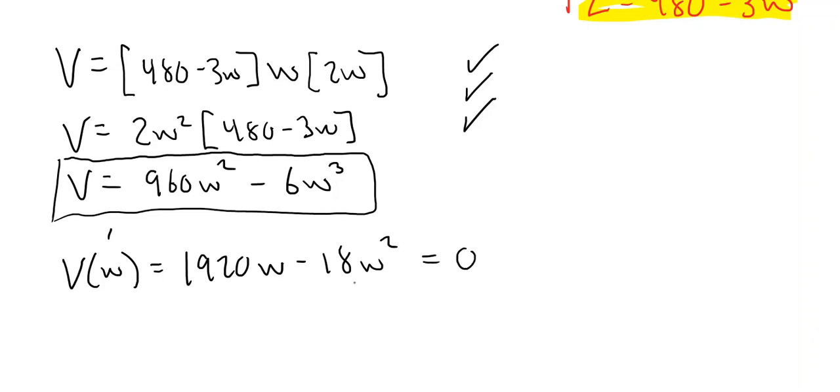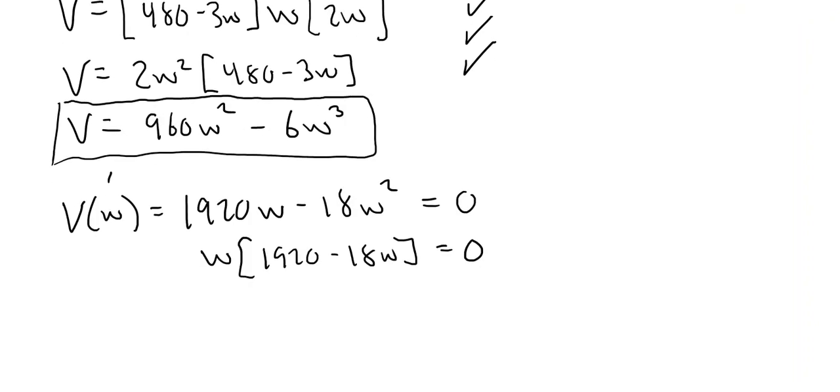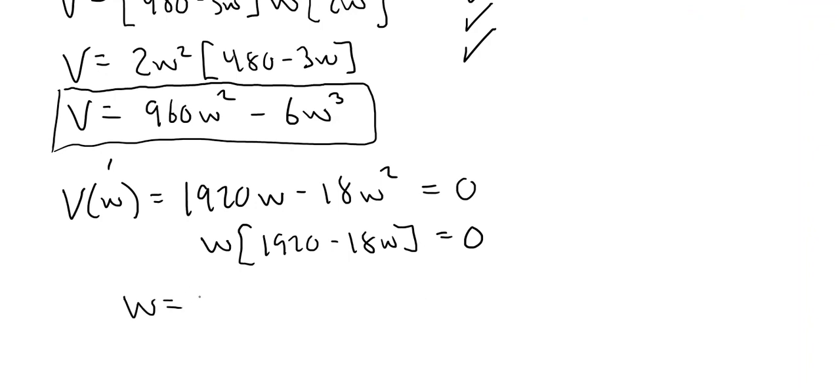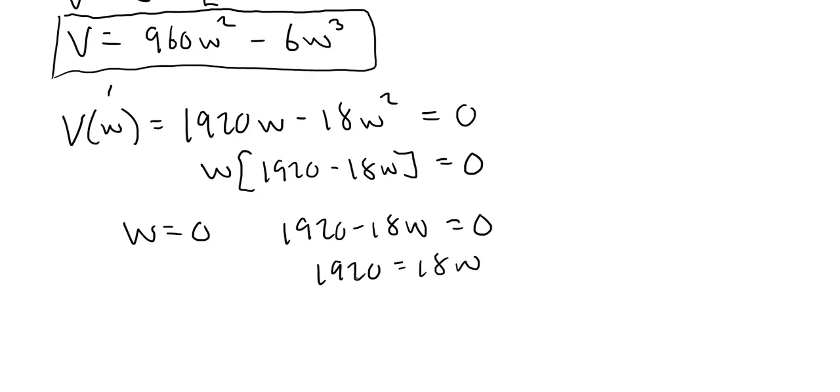And let's see, I can factor a W out of this. And we'll have 1920 minus 18W equals zero. And setting both of those factors equal to zero, we have W equals zero. 1920 minus 18W equals zero. Or 1920 equals 18W or W is going to be approximately, when you divide 1920 by 18, 106.67 to two decimal places or approximately 106.7.